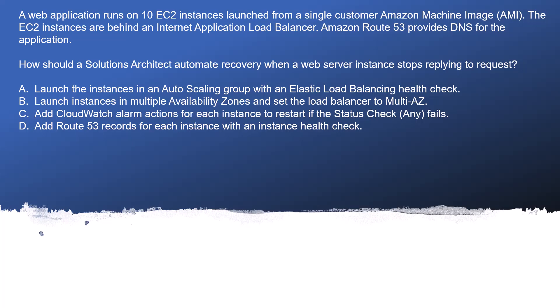So let's jump on the question. A web application runs on 10 EC2 instances launched from a single customer AMI. Just mark this hint — there are 10 EC2 instances, which you can consider the desired capacity. So 10 EC2 instances must be running always, spun up using the AMI.